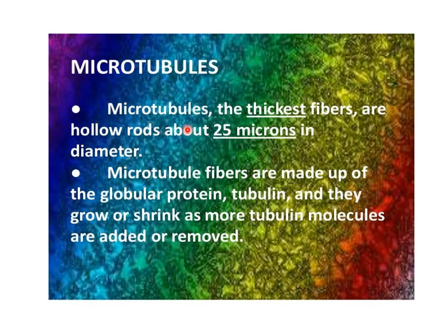Microtubules are the thickest fibers and are hollow rods about 25 nanometers in diameter. They are made up of globular proteins called tubulin proteins, and they have the capacity to grow or shrink as more tubulin molecules are added or removed. They can form various lengths of microtubule rods, but the diameter remains at 25 nanometers while the length may change from a few microns to larger lengths.